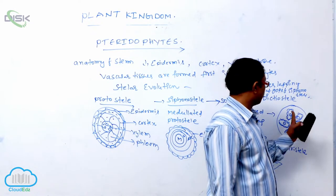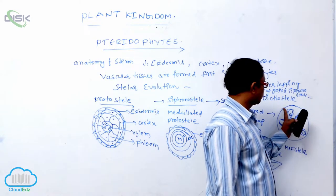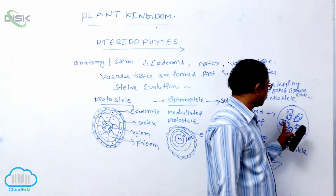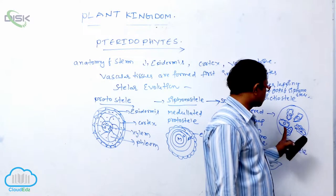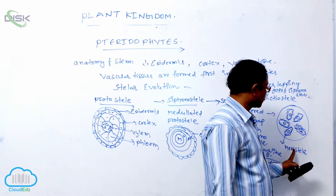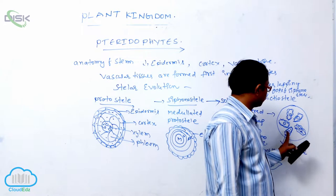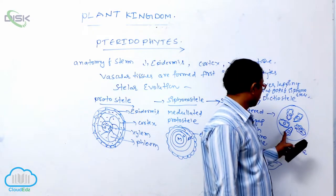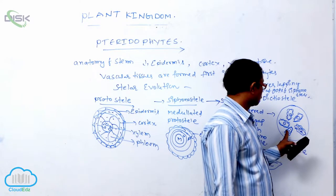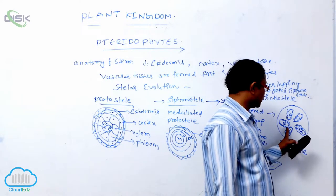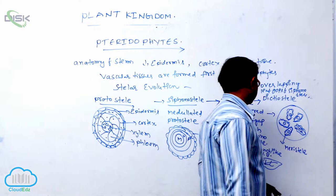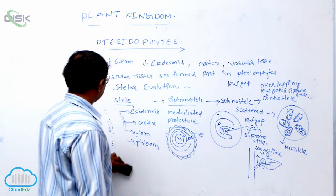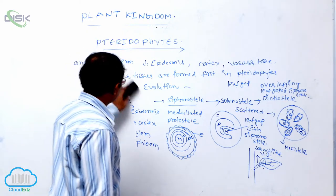After soleno steel comes dicteo steel. In dicteo steel, the vascular bundles are dissected into producing small parts. Each part is known as a meristele. Each meristele has endodermis, then pericycle, and xylem surrounded by phloem. That is the stelar evolution in Pteridophyta.